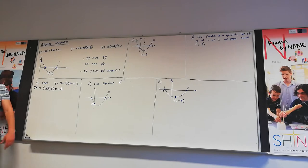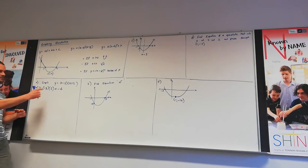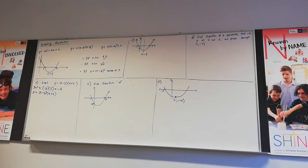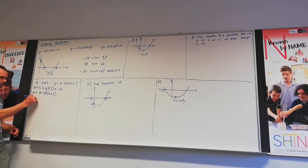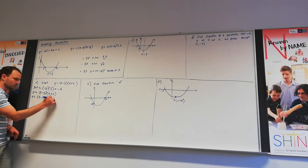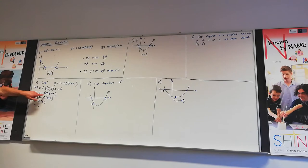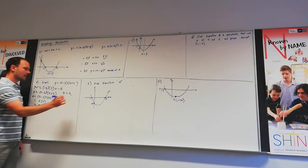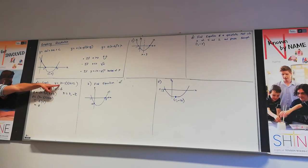Next we find the x-intercepts, which occur when y is 0. So we set 0 = (x − 3)(x + 2). To make the first bracket equal zero, we put x = 3: we get (3 − 3)(3 + 2) = 0 × 5 = 0. So our first x-intercept is 3. For the second, we put in x = −2 to make that bracket zero. So our x-intercepts are 3 and −2, and the y-intercept is −6. There's no a listed out the front, which means we assume it's 1 and it's positive.